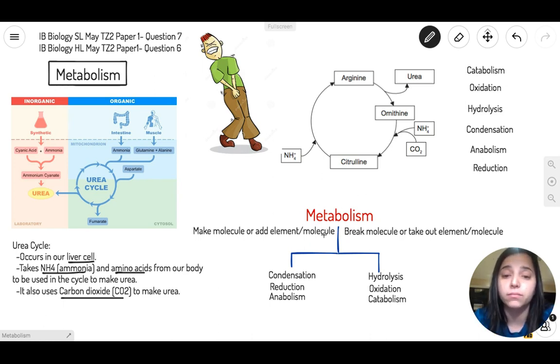Let's look at each one of these words. First is condensation - it means you're making a molecule. Reduction is when you're adding an element or molecule to something else, and that together makes anabolism, which is also making a molecule. On the other hand, you have hydrolysis. The word lysis means cut, so hydrolysis uses water to cut things. It's usually to break molecules. Oxidation means you are taking an element or molecule out of something, and all of this is catabolism, which is breaking a molecule.